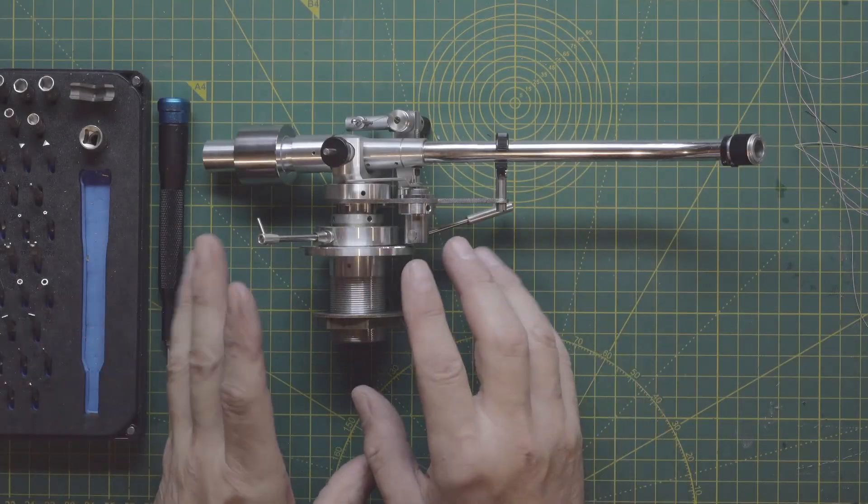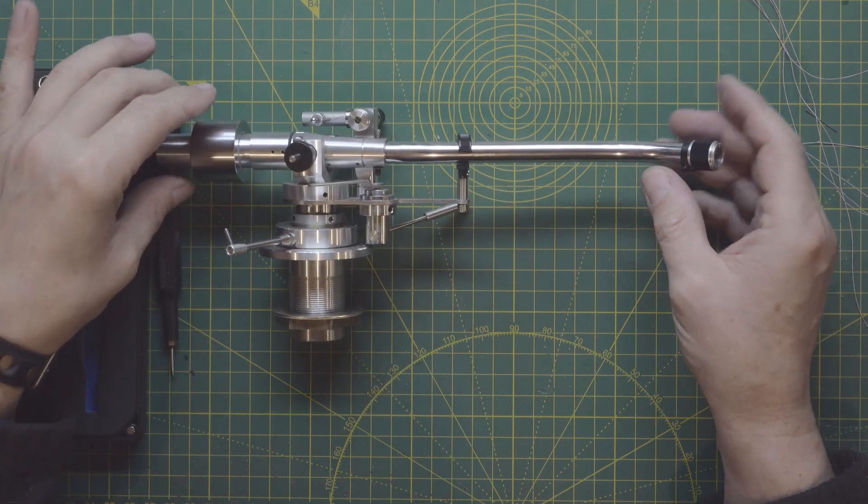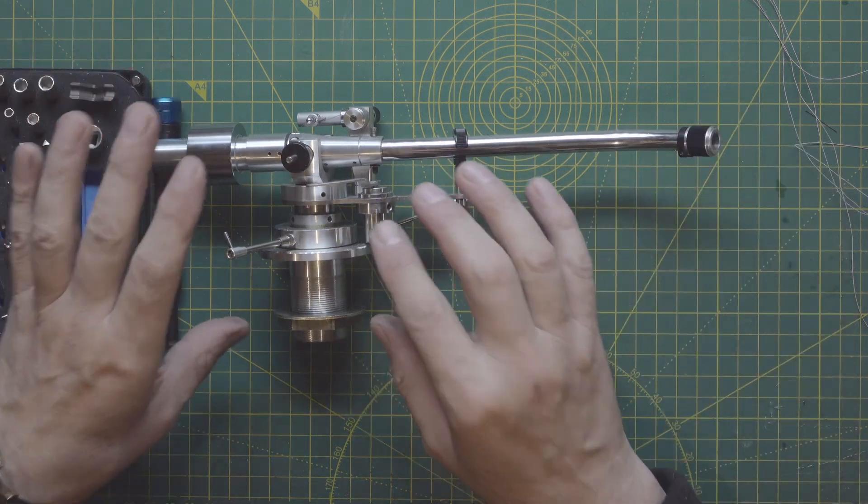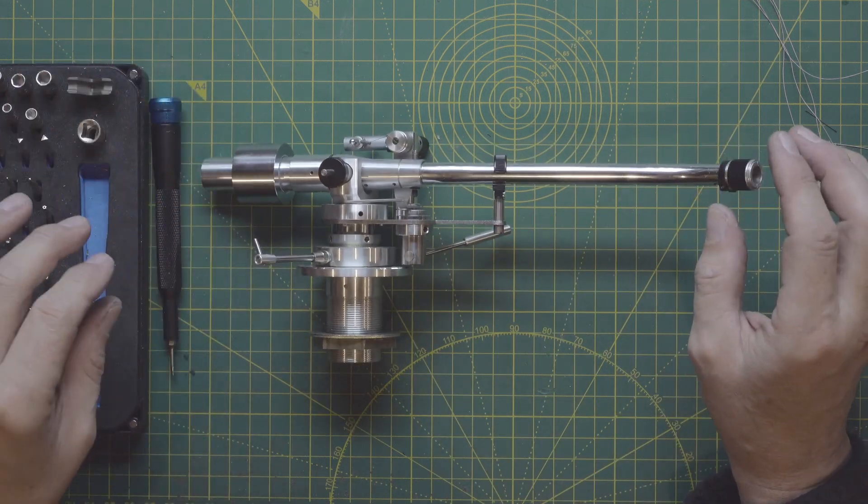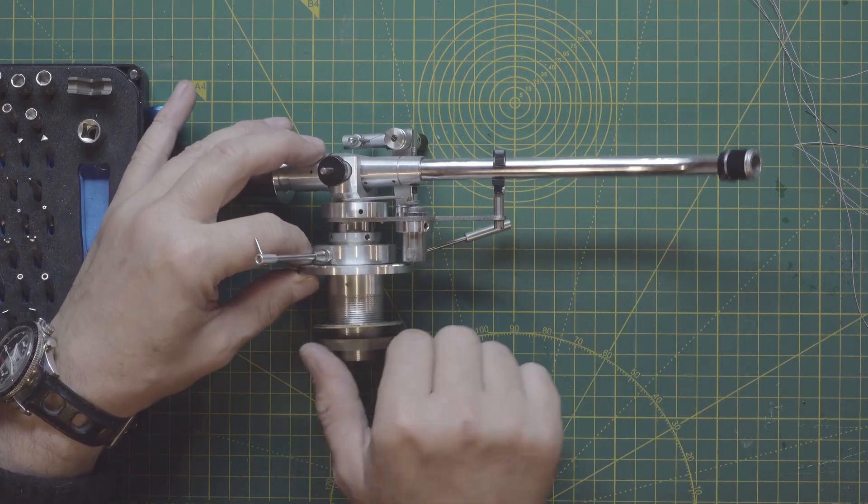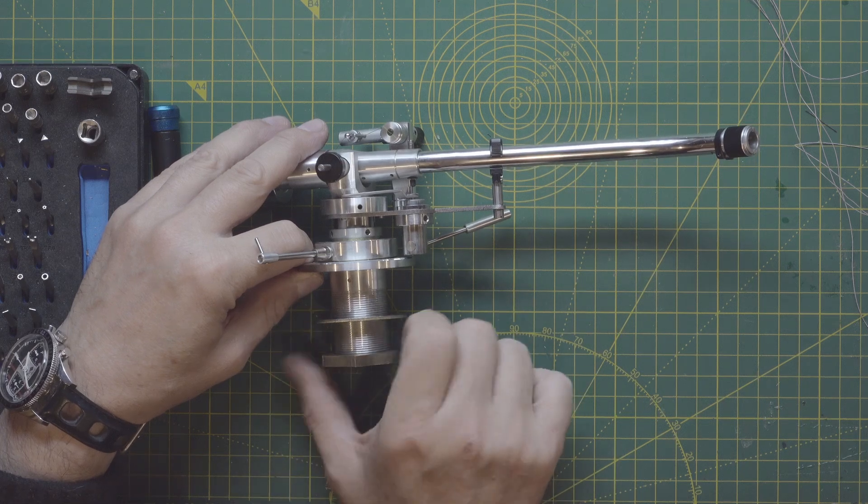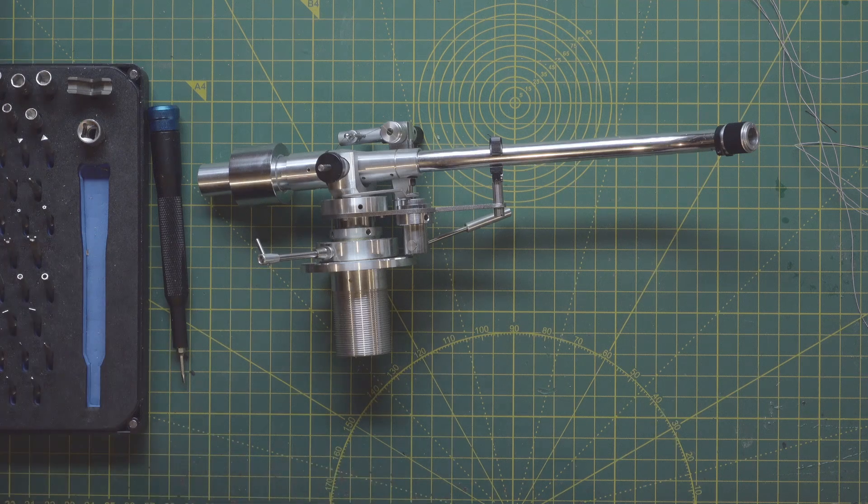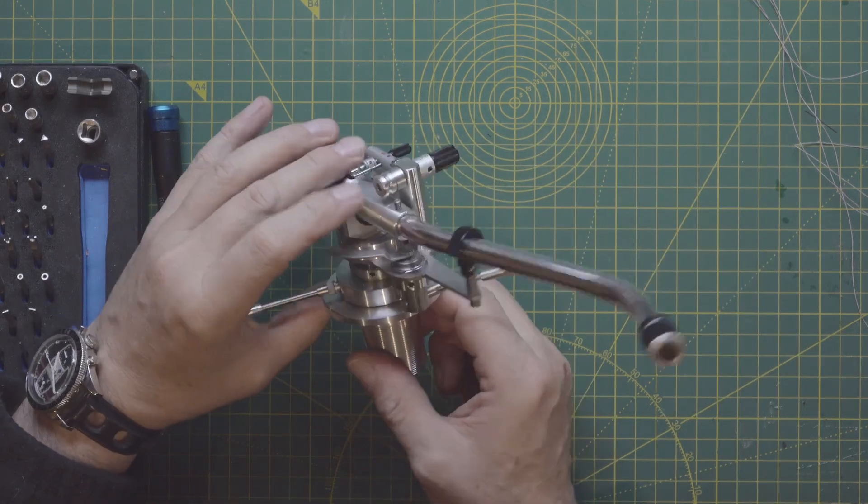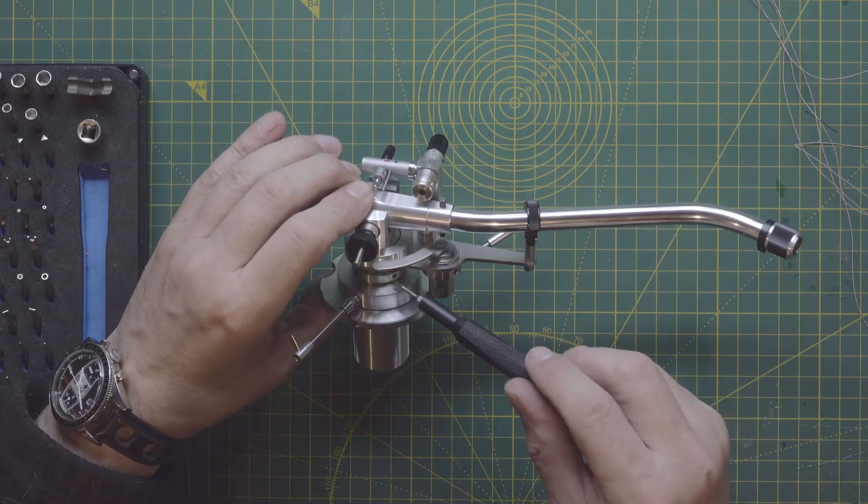Let's start to take down whatever we can. I never worked on the Micro Seiki MA-505, so bear with me. This tonearm is full of high precision screws, so if you don't have precision screwdrivers, don't even try to start. Now the easy part, we remove this locking nut here and we have to take down this part.